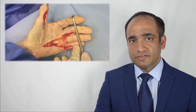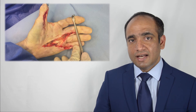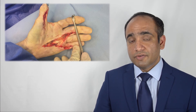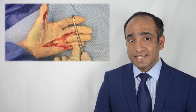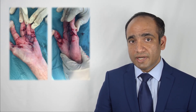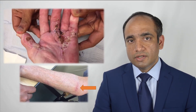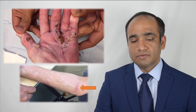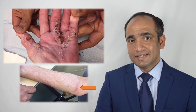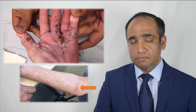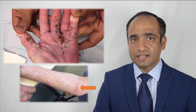Following correction of the deformity, he had a big gap in his palm where we couldn't close the wounds. So we ended up taking a skin graft from his elbow and applied it over the palm. This photograph taken at six weeks shows that the wound is healing really well in his palm and the graft has also taken up.